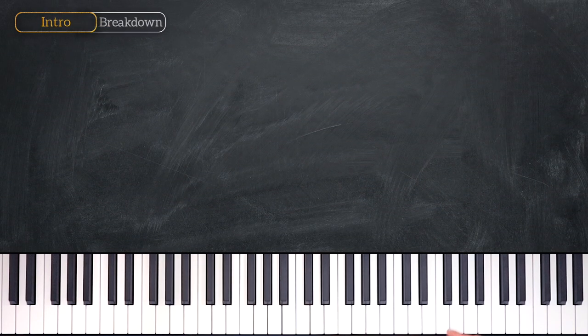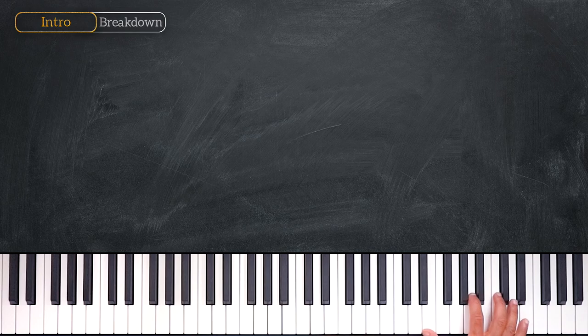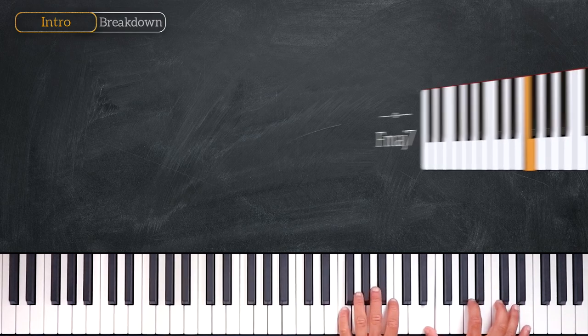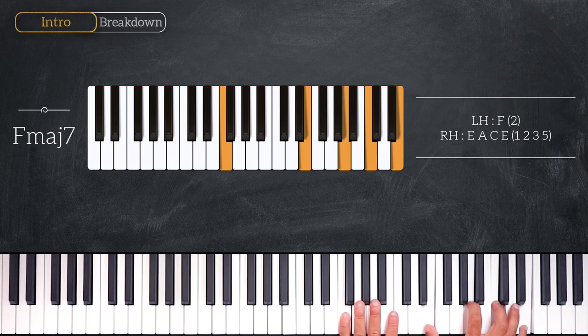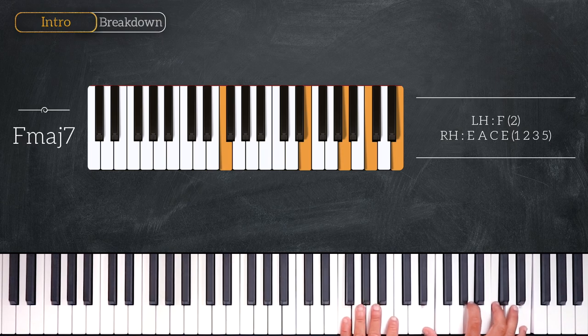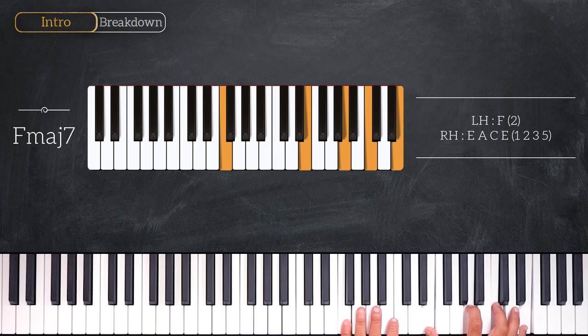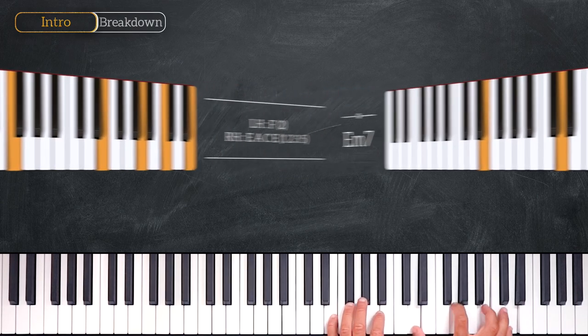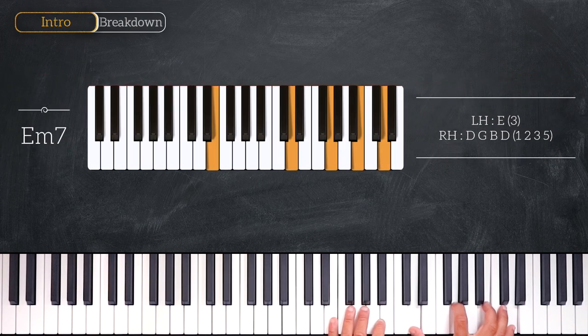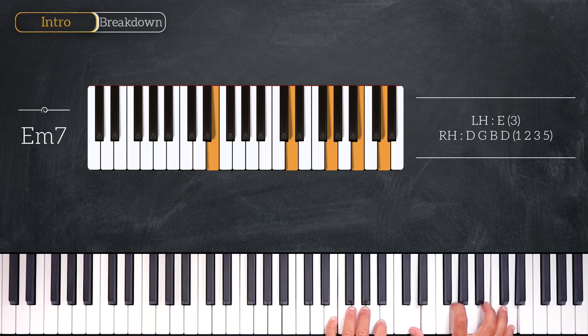So we start high on the keyboard, playing F major 7. F on the left hand and E, A, C, E on the right. Then we move all the notes down one note and we get this E minor 7 chord: E, D, G, B, D.